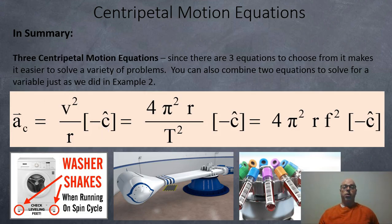Okay, in summary, the three centripetal motion equations are very useful. We've got v² over r, 4π²r over T², and 4π²rf², all towards the center of the circle. You can combine equations when necessary, or you can just use one if you like. And they're useful for solving many kinds of problems. For example, a spin cycle in a washing machine, an aeronautical centrifuge, or a blood centrifuge. So I hope this helped. Thank you.